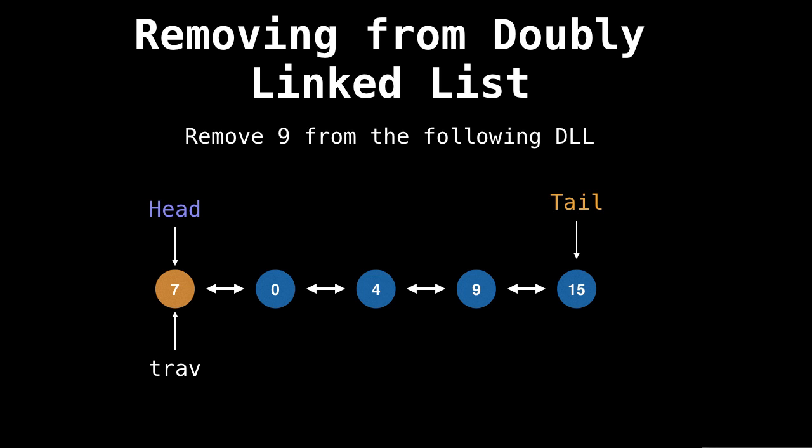So let's start trav at the very beginning, and seek until we hit nine. We've reached nine, and we want to remove it from the list. To do this, set four's pointer to be equal to 15. We have access to four and 15 because they are trav's previous and next pointer respectively. Similarly, set 15's previous pointer to equal four. Notice that trav is now red, meaning it is ready to be removed. So we get rid of trav. And now if we flatten out the doubly linked list, we see that it no longer contains nine.